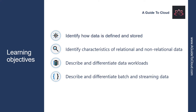Let's look at the learning objectives for this episode. We will start with how to identify how data is defined and stored, and we will identify what are the characteristics of relational and non-relational data. We will describe and differentiate different types of data workloads, and we will describe and distinguish batch and streaming data as well. So without wasting any more time, let's get into it.